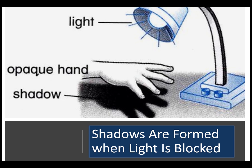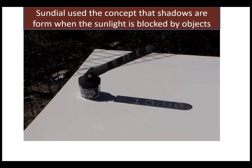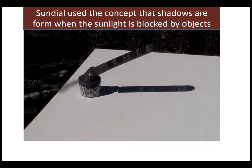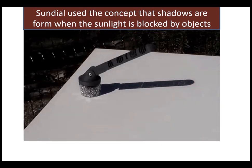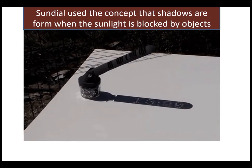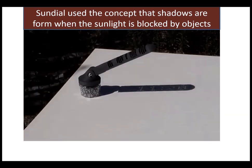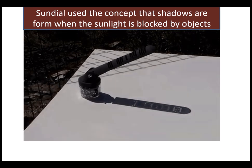Because light travels in a straight line, shadows are formed when light is blocked by an opaque object. The direction, size, shape, and length of the shadow will change when the position of the light source changes. The sundial was used in ancient times to determine the time during the day, using the concept that shadows are formed when sunlight is blocked by objects.